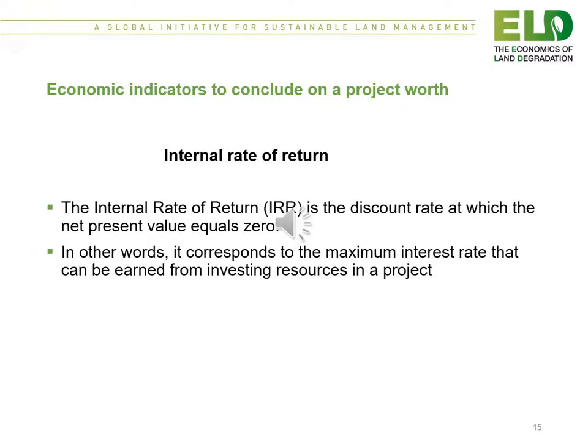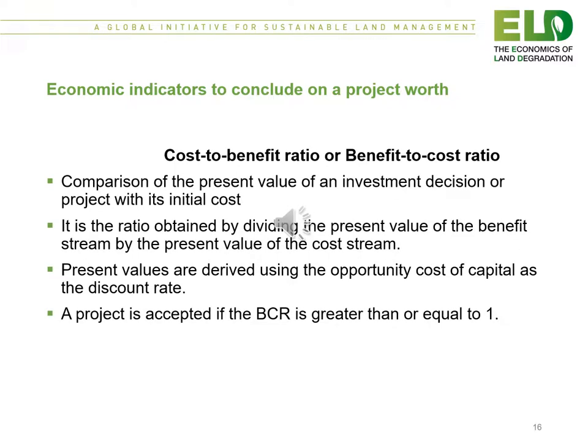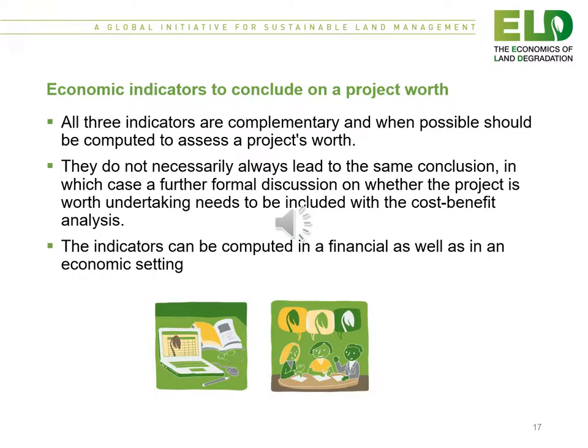The second indicator is the internal rate of return (IRR), which is the discount rate at which the net present value equals zero. In other words, it corresponds to the maximum interest rate that can be earned from investing resources in a project. The third indicator is the benefit-to-cost ratio, which is the ratio obtained by dividing the present value of the benefit stream by the present value of the cost stream. Present values are derived using the opportunity cost of capital as the discount rate. A project is acceptable if the benefit-to-cost ratio is greater than or equal to one.